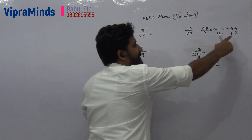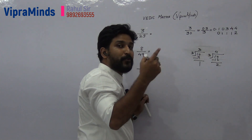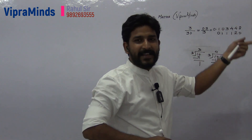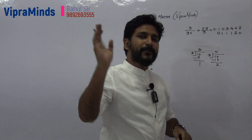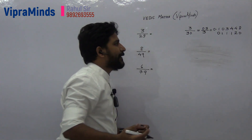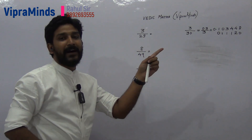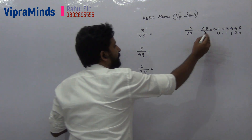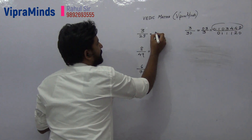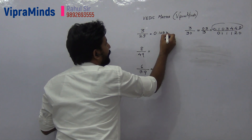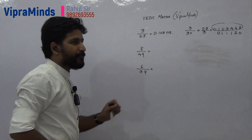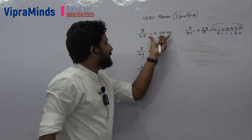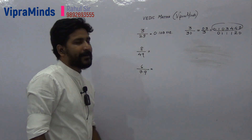Next number is 24: 3 into 8 is 24, remainder is 0. Next number is 08, that is 8 divided by 3 — just keep on doing this. So if you want up to 3 or 4 decimal places, the answer for 3 divided by 29 will be 0.103448 and so on. You can keep going and find further decimal places.